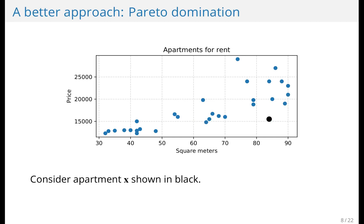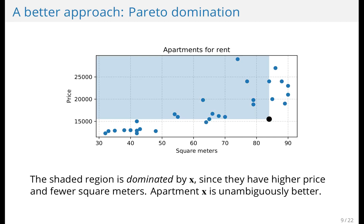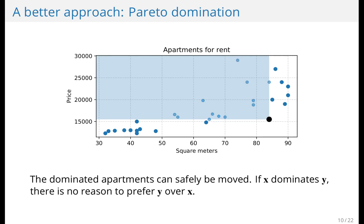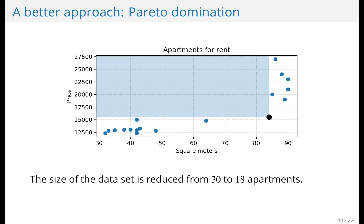Consider this apartment shown in black. There's no reason at all to consider any of the apartments to the left and above it, because these are all both more expensive and have less square meters. So we can actually just remove all these apartments. In general, we say that the apartment shown in black dominated all the apartments that we just removed. And this reduces the dataset to 18 apartments.